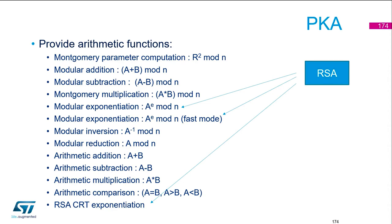I want to give you a couple of words about the fast mode. The fast mode is when you operate in the Montgomery domain — it is a way to accelerate modular exponentiation when you are using the same modulus repeatedly. You need to prepare your parameters and compute the Montgomery parameter first, and then modular exponentiation can be used in fast mode. There are also many basic operations that can be sped up, which may be interesting depending on which algorithm you want to use.